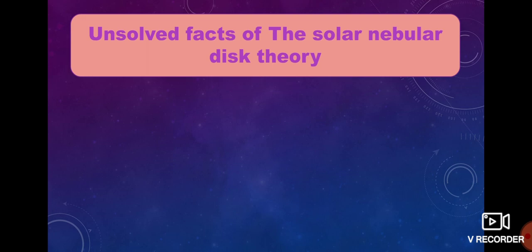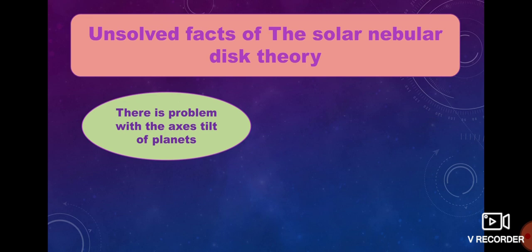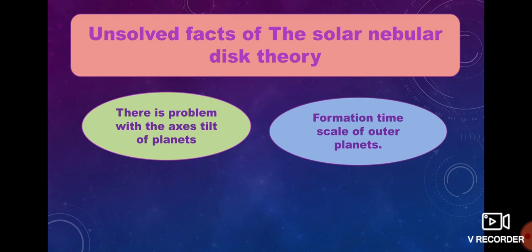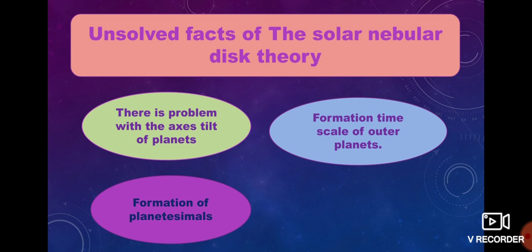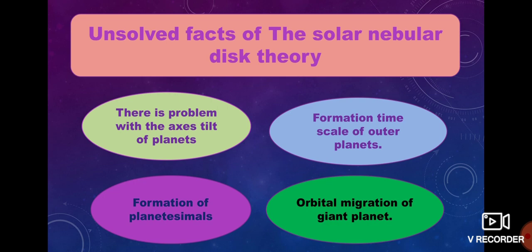Now, the unsolved problems of the solar nebula disk theory. First, there is a problem with the axial tilt of planets — this theory predicts all planets have the same axial tilt, but that is not true. Second, the formation timescale of outer planets predicted by this theory is larger than the actual timescale. Third, the formation of planetesimals is not well explained by this theory. And finally, the orbital migration of giant planets is not explained — specifically, why Jupiter has an inward migration, and why most planets have inward or outward migration.